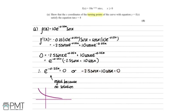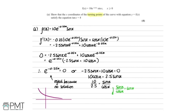From −2.5 sin(x) + 10 cos(x) = 0, I'll add 2.5 sin(x) to the other side to get 10 cos(x) = 2.5 sin(x). Then dividing both sides by 2.5 and by cos(x), we get 10/2.5 = sin(x)/cos(x). Since sin(x)/cos(x) = tan(x), we can write tan(x) = 4, which gives us 4 when put into the calculator — as needed.